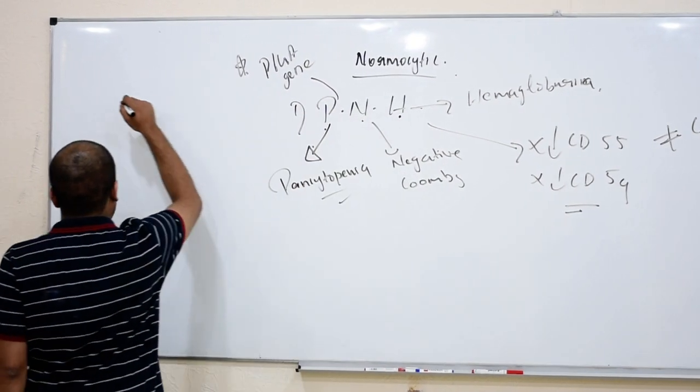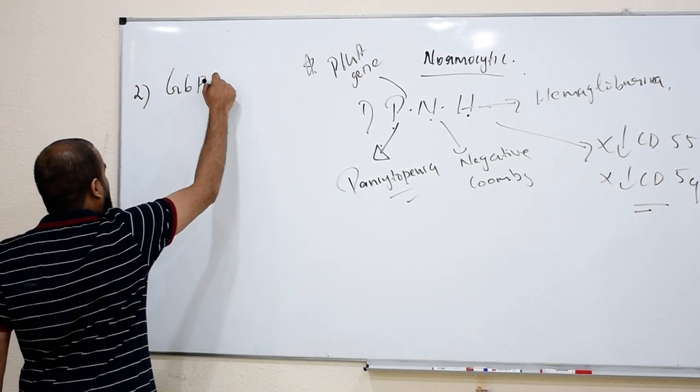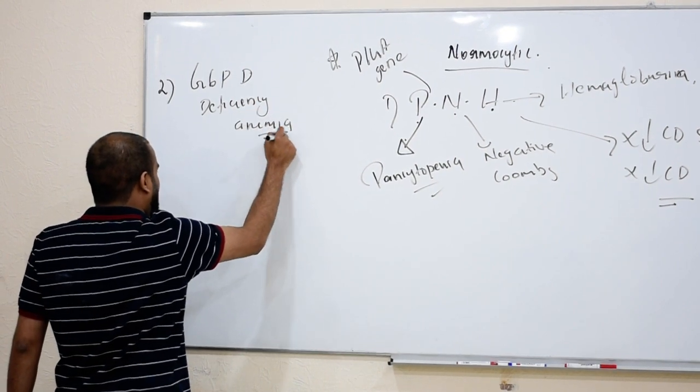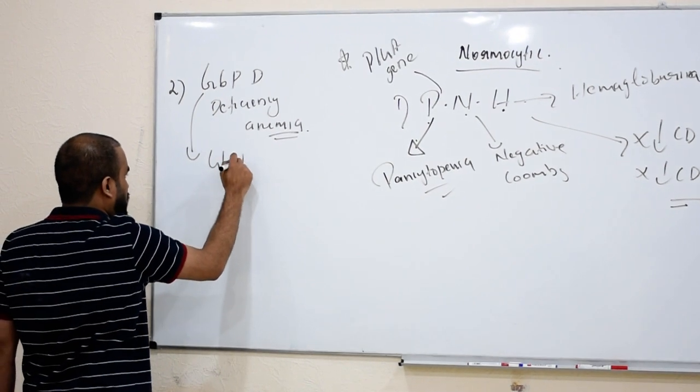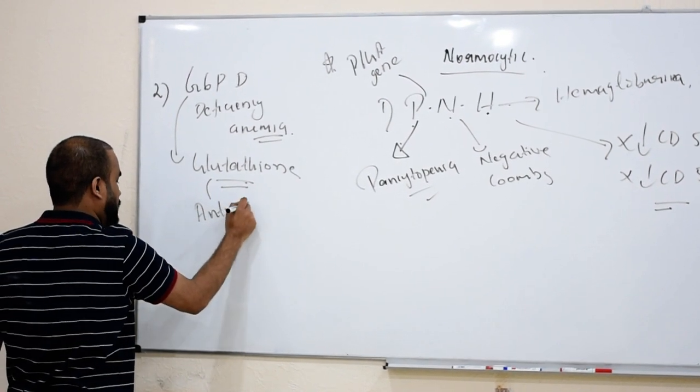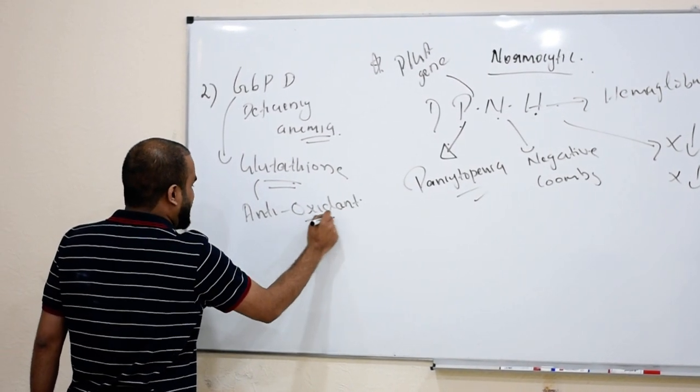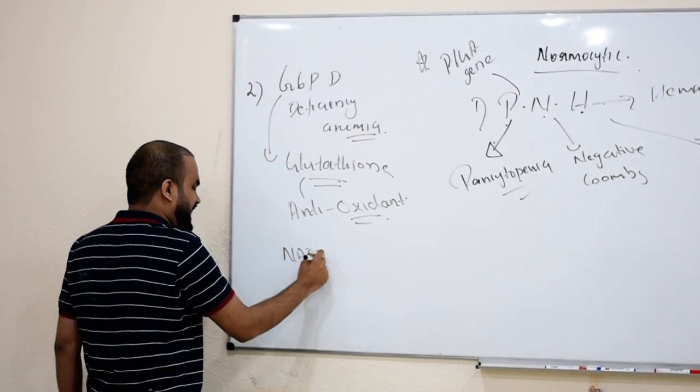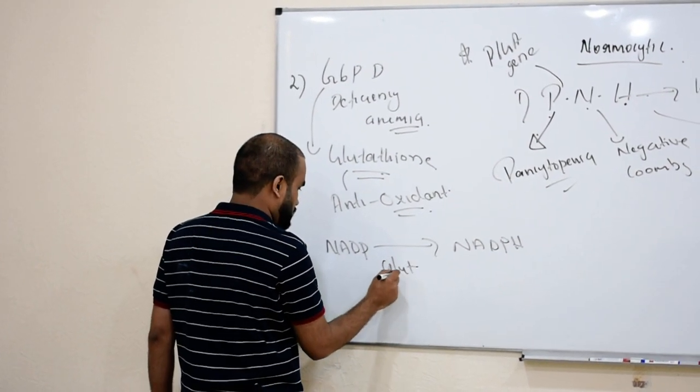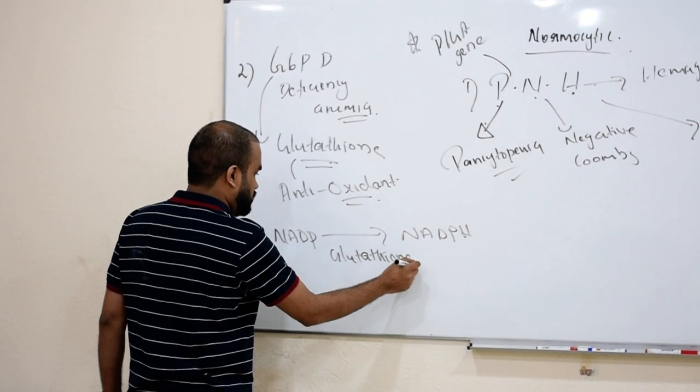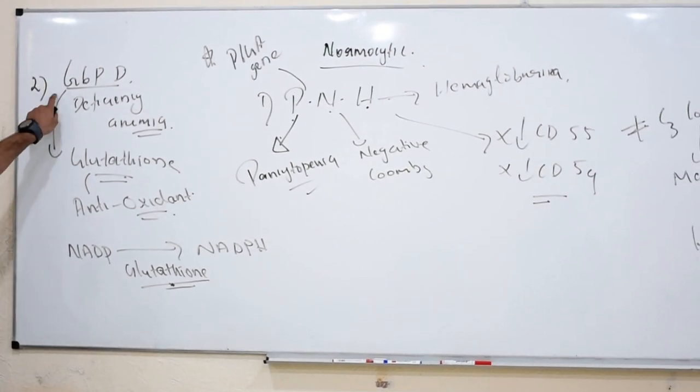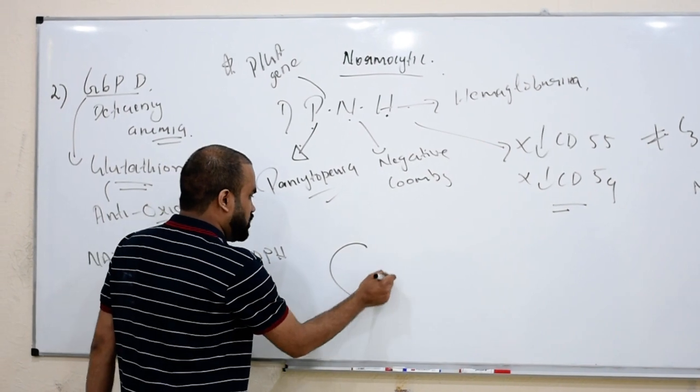Now next anemia in normocytic is G6PD deficiency anemia. Remember why we need G6PD? To make glutathione. We discussed this in biochemistry deeply before. We know glutathione is a good antioxidant. Actually to make glutathione we need NADPH, to make NADPH we need G6PD.